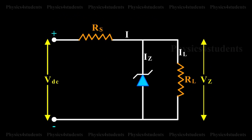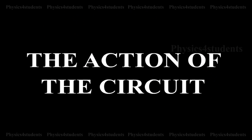In spite of changes in the load current or in the input voltage, the Zener diode maintains a constant voltage across the load. The action of the circuit can be explained as given below.